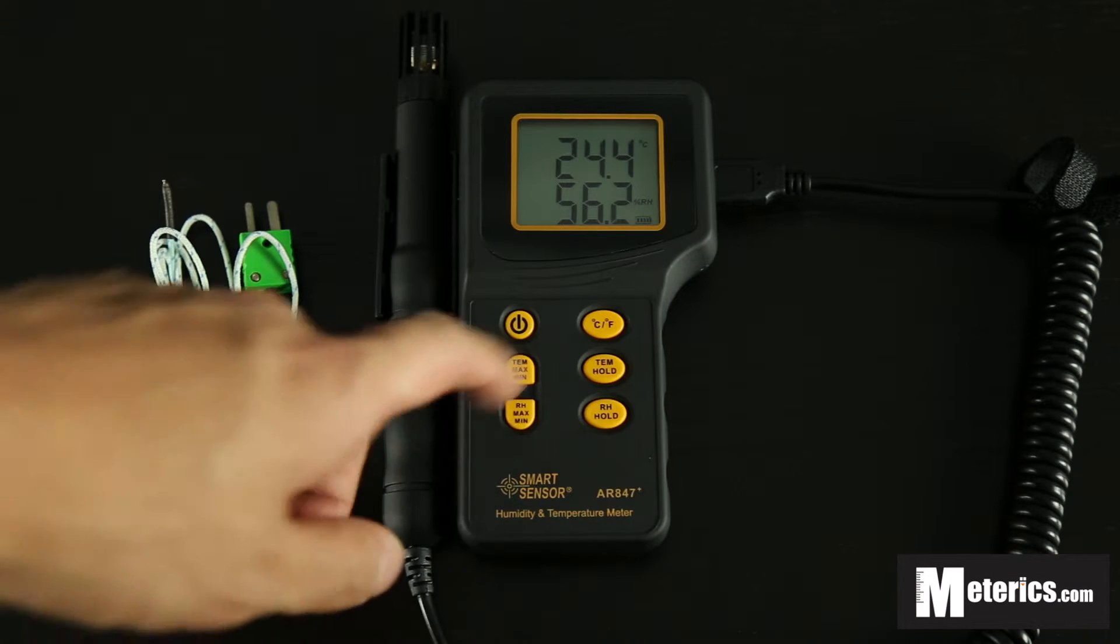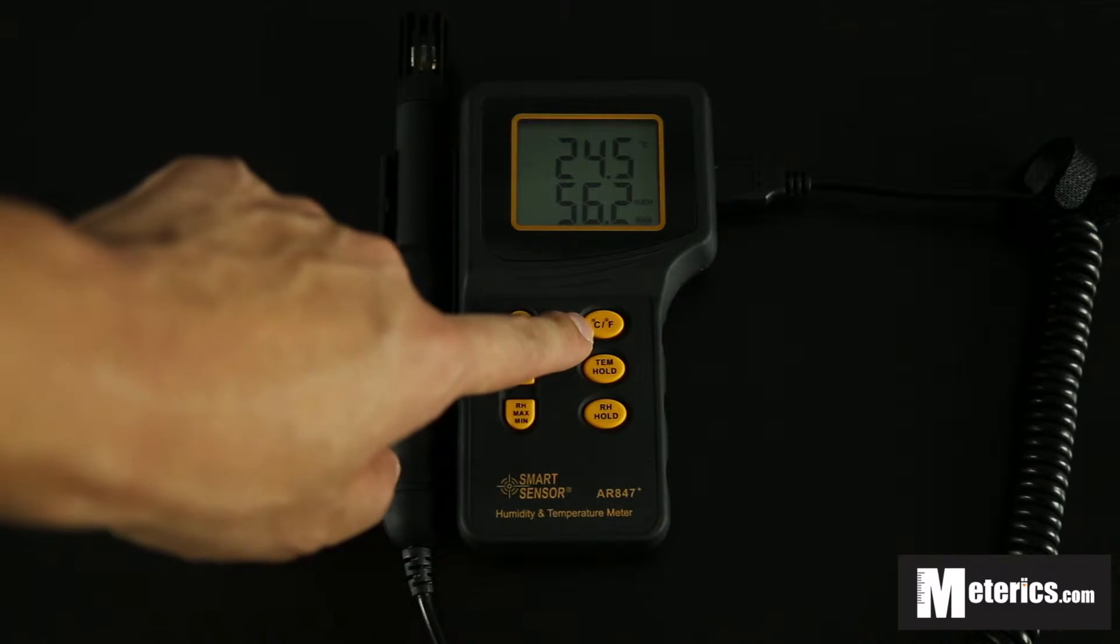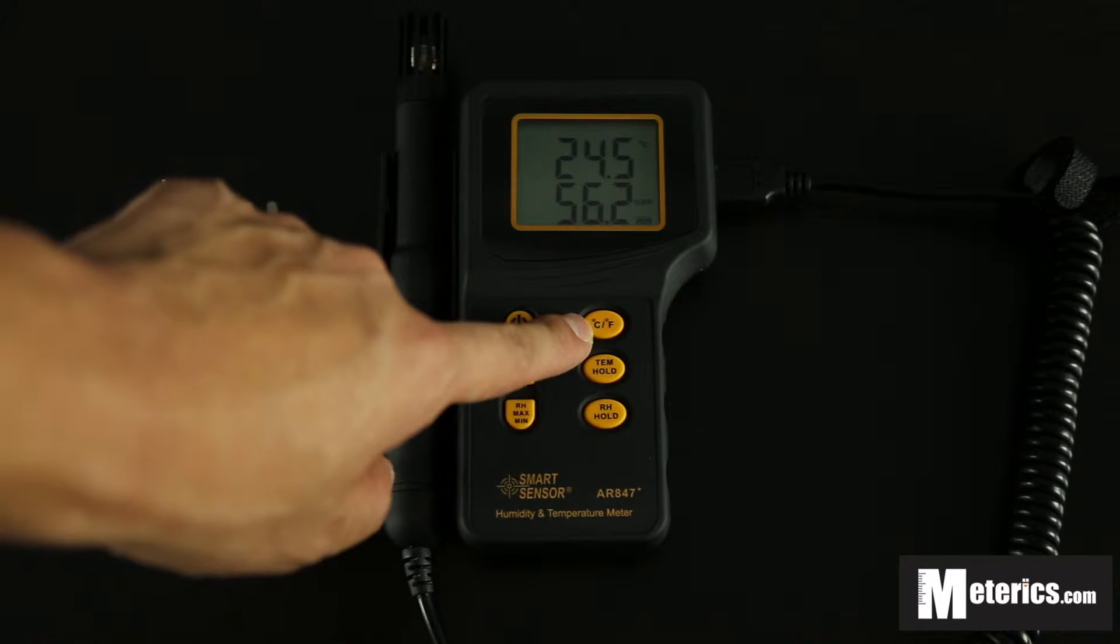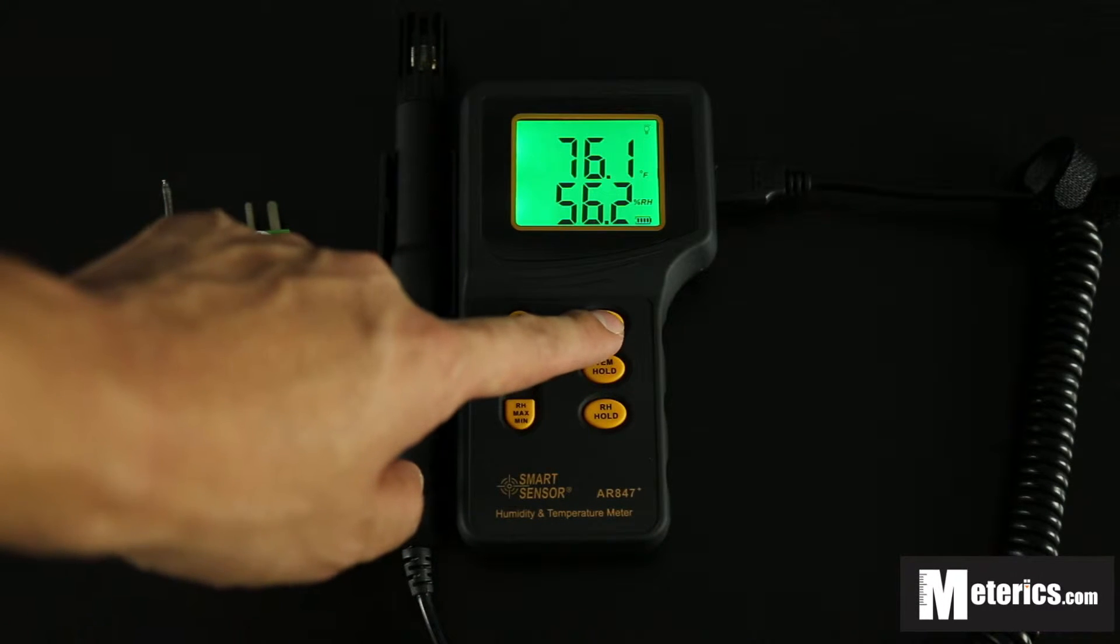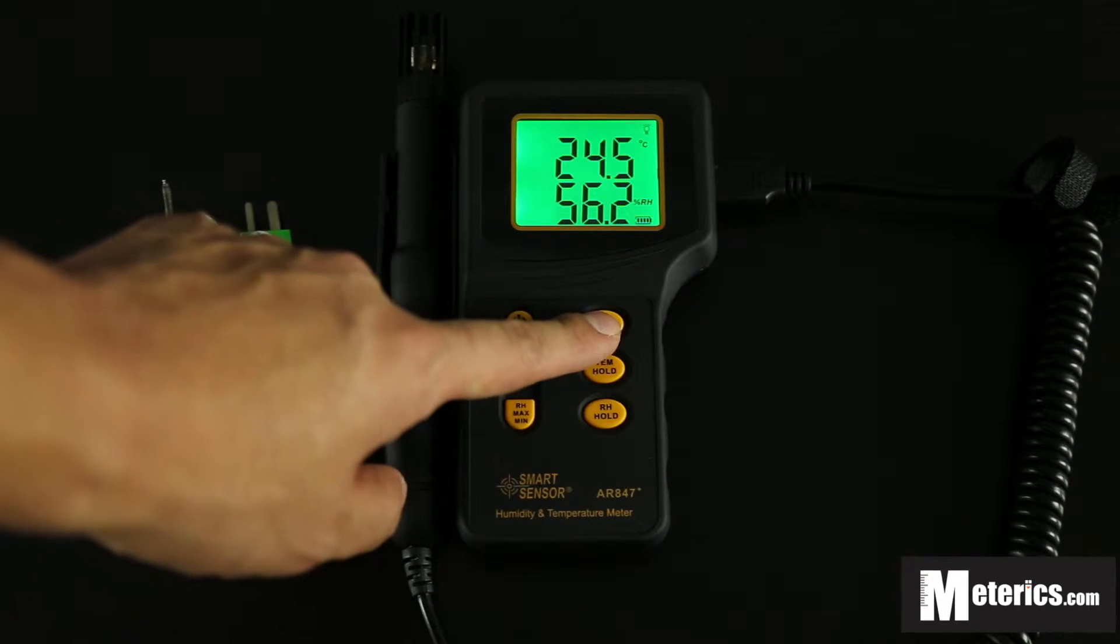I'm going to go through the buttons. This button says C and F, which is Celsius and Fahrenheit. If you click that once, you will switch between Fahrenheit and Celsius.